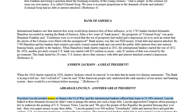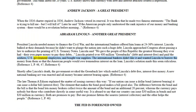President Lincoln needed money to finance the Civil War and the international bankers offered him loans at 24 to 36 percent interest. Lincoln balked at their demands because he didn't want to plunge the nation into such a huge debt. Lincoln approached Congress about passing a law to authorize the printing of U.S. Treasury notes. Lincoln said: 'We gave the people of this republic the greatest blessing they ever had — their own paper money to pay their debts.' Lincoln printed over 400 million greenbacks, debt and interest free, and paid the soldiers, U.S. government employees, and bought war supplies.